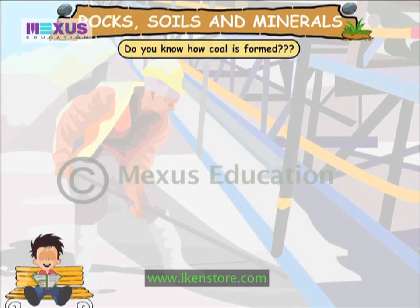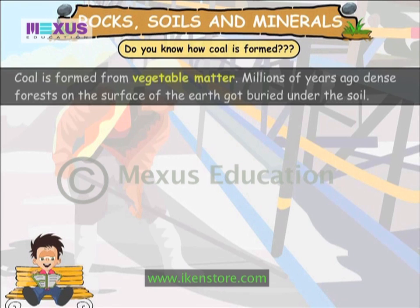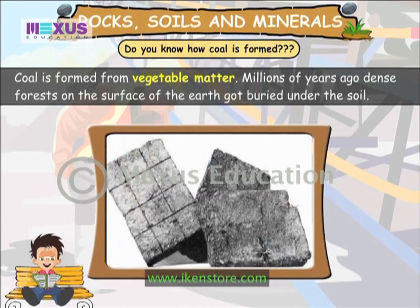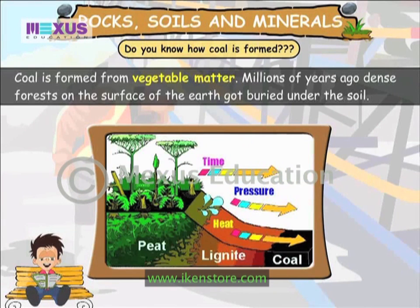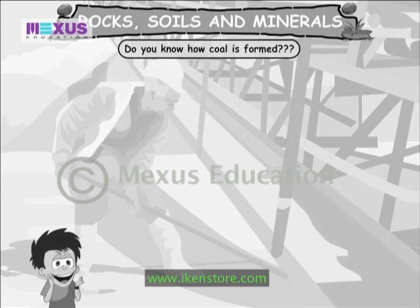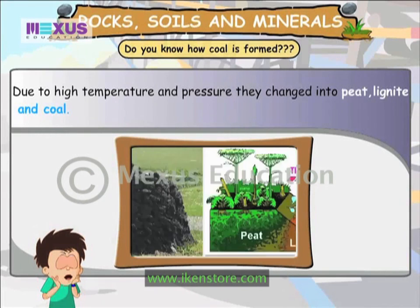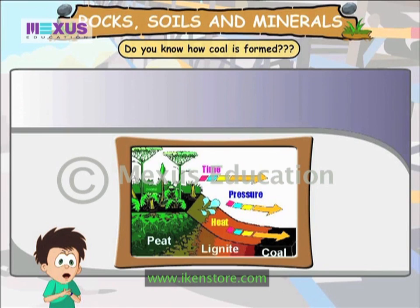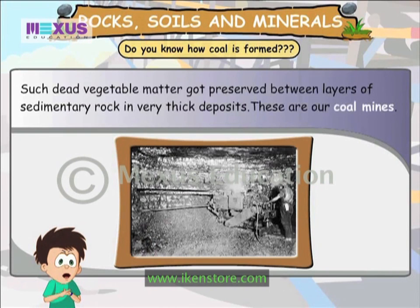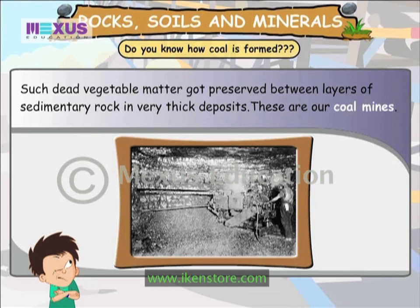Coal is formed from vegetable matter. Millions of years ago, dense forests on the surface of the earth got buried under the soil. Due to high temperature and pressure, they changed into peat, lignite and coal. Such dead vegetable matter got preserved between layers of sedimentary rock in very thick deposits. These are our coal mines.